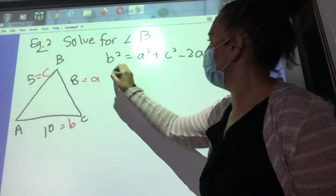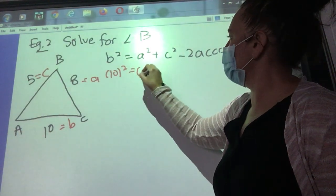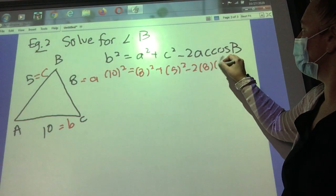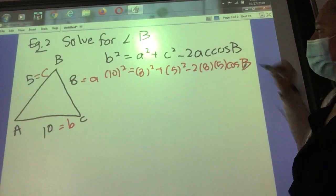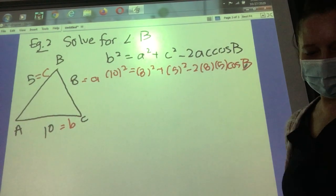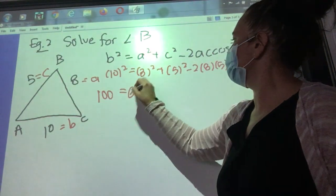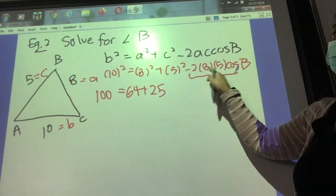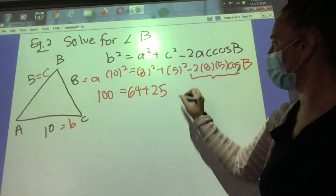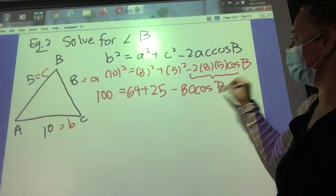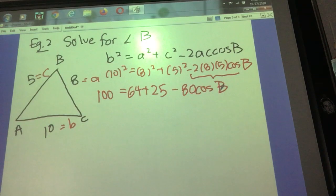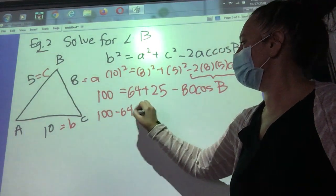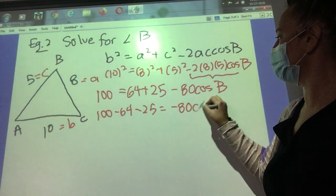So we know that side B is 10, side A is 8, side C is 5. Side A is still 8, side C is still 5. And we don't know our angle here. So again, we'll simplify. This is 164, 25. Now minus 2, again remember this is all one term. Minus 2 times 8 times 5. That does give us minus 80. So I'm going to subtract out the 64, the 25. But the minus 80 stays with the cos B.